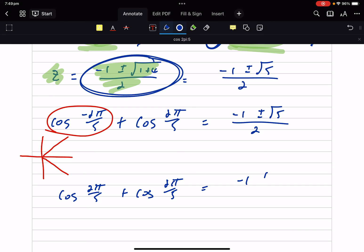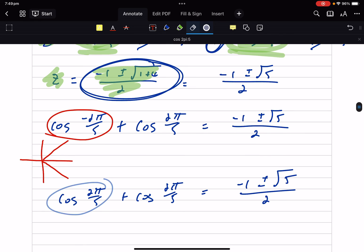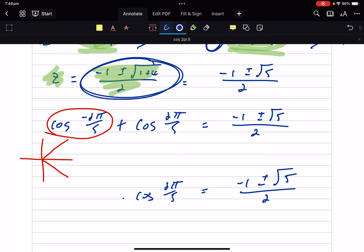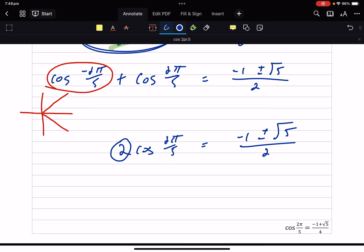So I've got one, two of them, which means I've got 2 cos 2π/5 equals... And I'm going to get that 2 to the other side, which equals minus 1 plus or minus root 5 over 4.